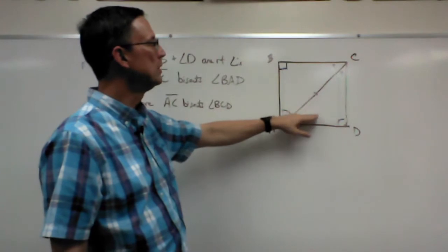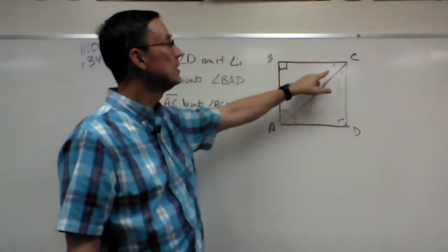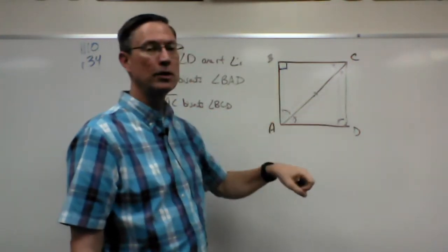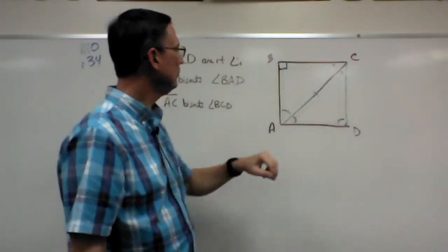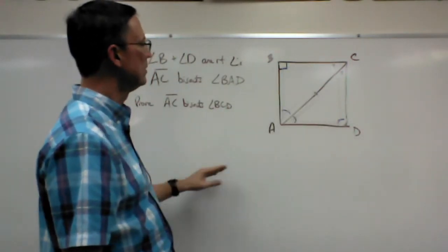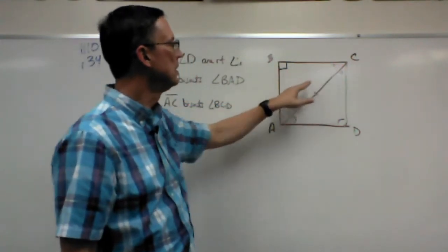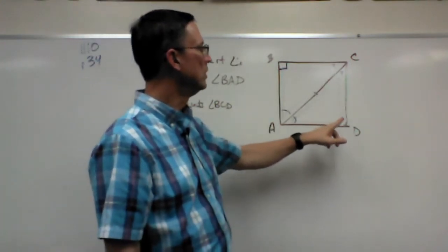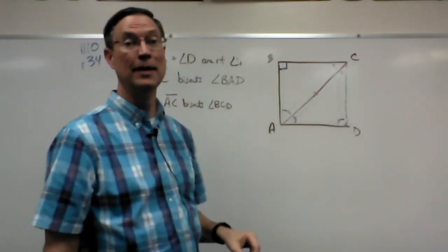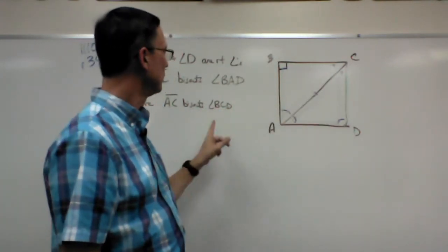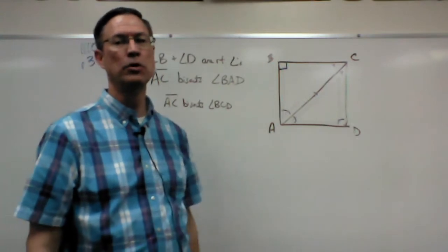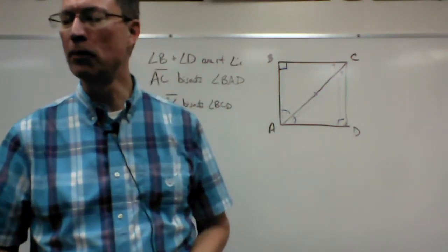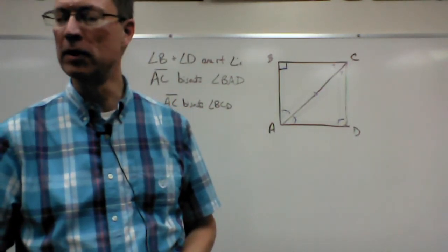Once we have proven that these two are congruent, now can I state that these corresponding parts of these congruent triangles are congruent? Yes. So then one of the steps further down is to indicate, we can't just call it angle C, we have to call it angle BCA is congruent to angle DCA. And if those two angles are congruent, then you can come to your conclusion by definition of bisector. Hopefully that helps you with the proof there on page 34. See you next time.